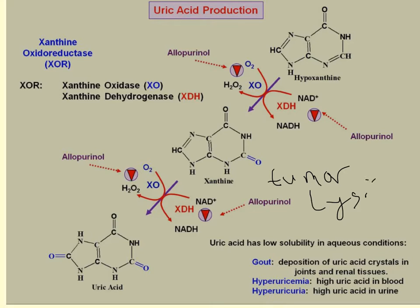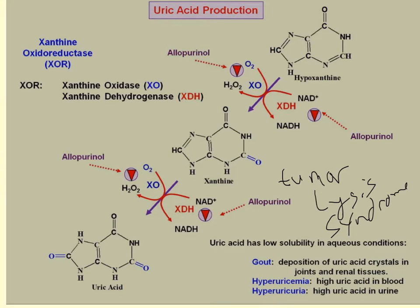During tumor lysis syndrome, chemotherapy causes all of your tumor cells to turn over. You have such high cell turnover that it releases the nucleotides, which are degraded to hypoxanthine and xanthine and ultimately to uric acid. Uric acid has a very low solubility in aqueous solutions, so if the concentration gets too high, it will precipitate forming uric acid crystals.